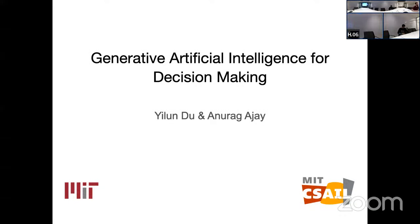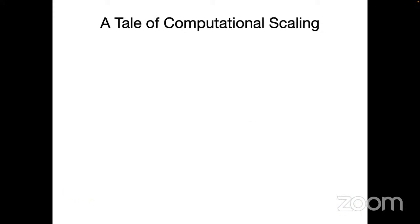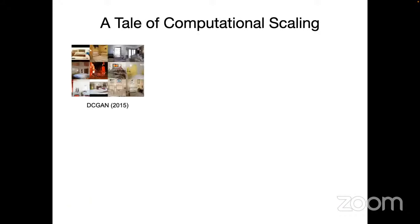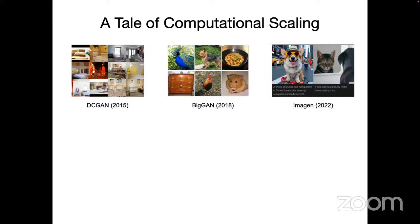AI for decision-making. Today we'll present some of our work on generative artificial intelligence for decision-making. If you look at the progress in the last couple of years in generative modeling, we've gone from bedroom scenes that don't look so accurate, to realistic images of different animals and classes, to very sophisticated scenes that you control using text descriptions.